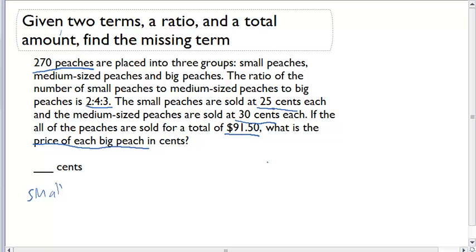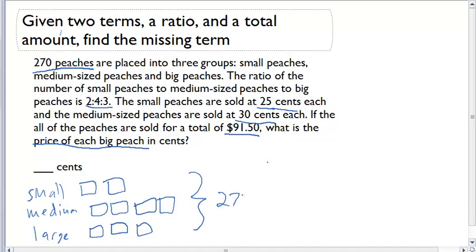The small, we have two units. The medium, we have four units. And for the large, I have three units. And we know that the total that we sold was 270. Well, we have here a total of, if we add this up, two plus four plus three, nine units.